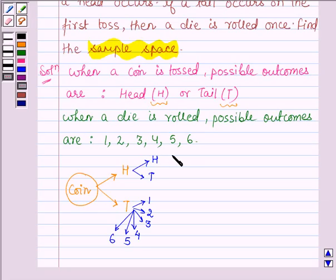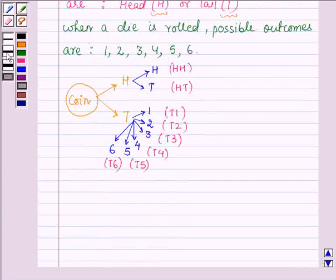The first sample point is HH. Second is HT. Then we have T1, T2, T3, T4, T5 and then T6.